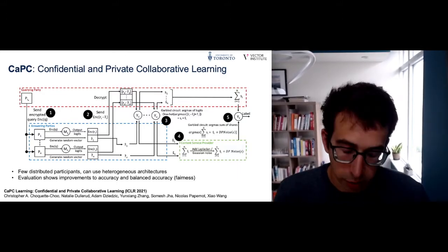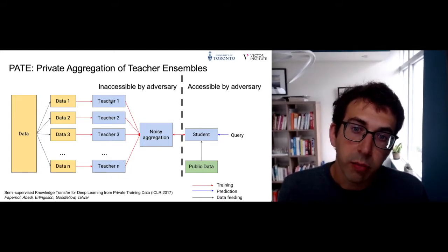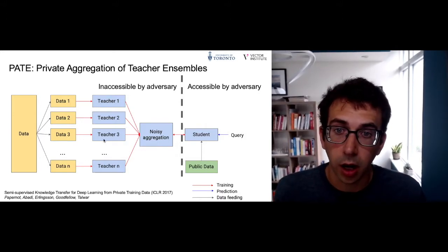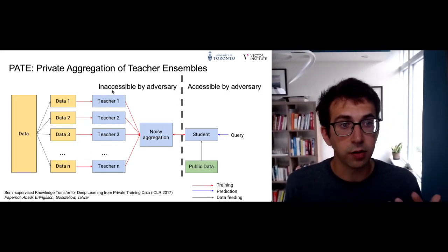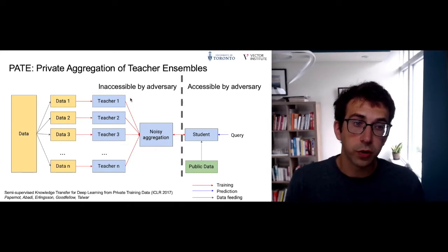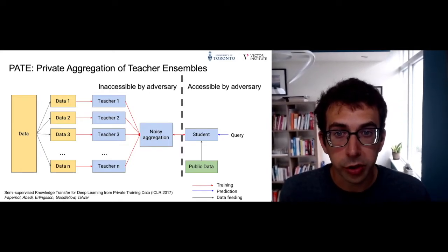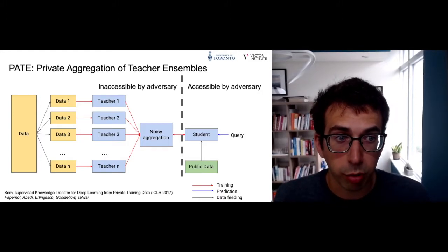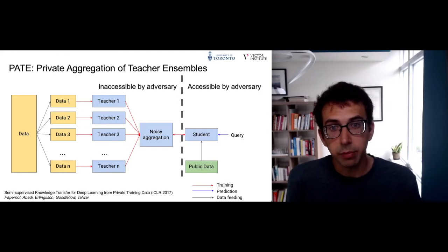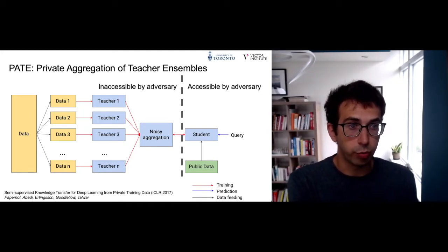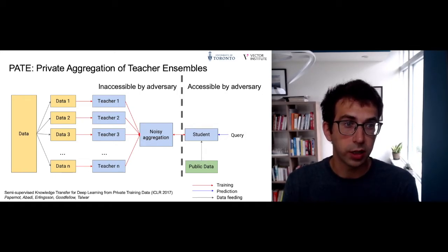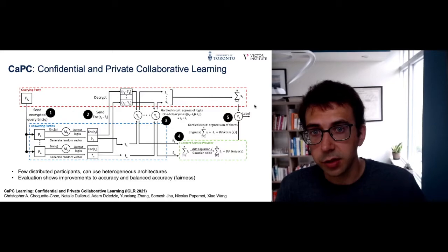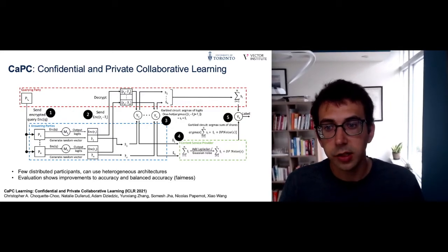PATE has an interesting property: when most teachers agree on a prediction, that prediction is likely correct — we have generalization stemming from independent training on different data subsets. And when most teachers agree, we can introduce more noise to the votes before aggregation, proving stronger differential privacy guarantees. There is a very nice alignment between generalization and differential privacy: the more agreement, the more likely we're generalizing well, and the more private we are.